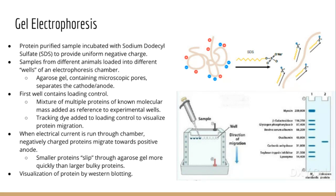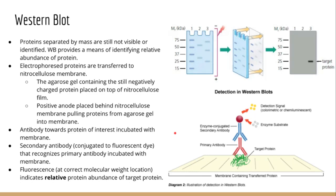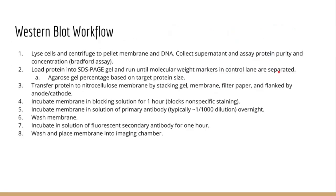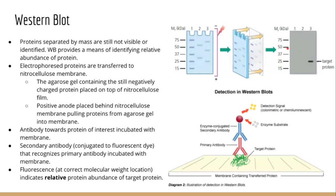In order to pick out a specific protein within the experimental lanes, you need to conduct a western blot. A western blot is performed to visualize the invisible proteins in your gel. The first step is to transfer all of your proteins onto a nitrocellulose membrane — the reason you do this is because the nitrocellulose membrane is permeable to antibodies that can be used to probe for the antigens you are interested in.